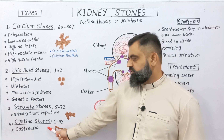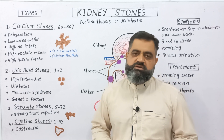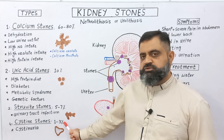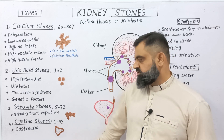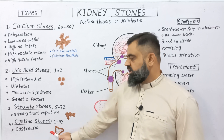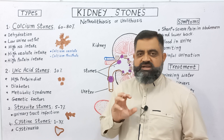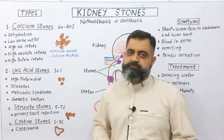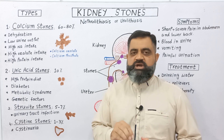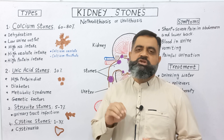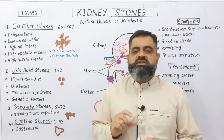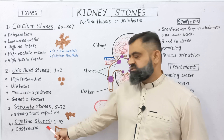The fourth type of stones are cystine stones. They are 1 to 3 percent of all types of stones. These stones are triangular in shape and are caused by a condition known as cystinuria. In this condition, a patient has more of the amino acid cysteine in their urine, which can accumulate inside the kidney or urinary system, resulting in the formation of cystine stones.